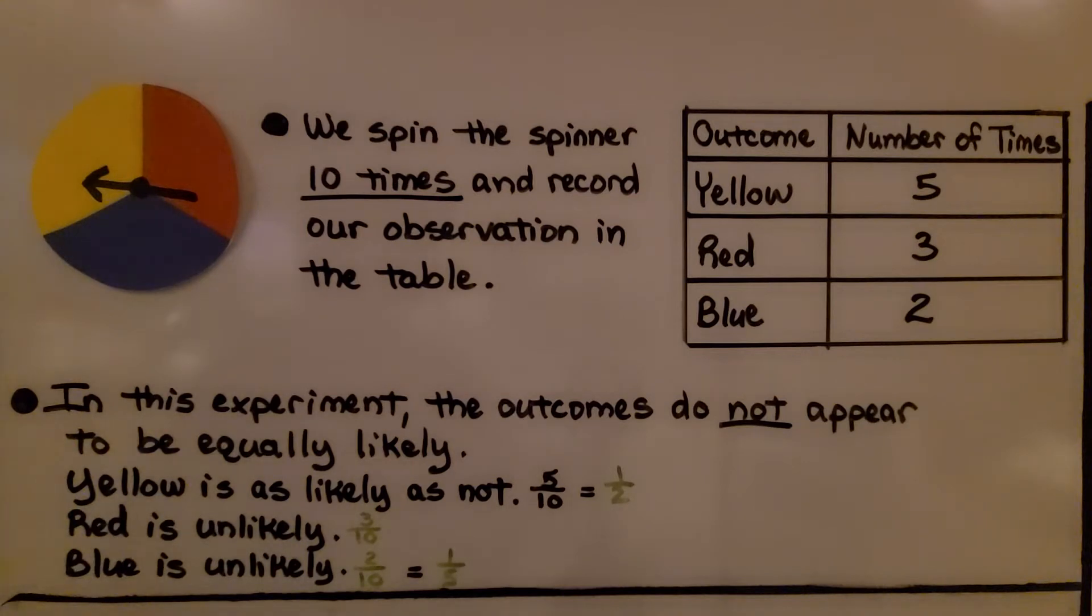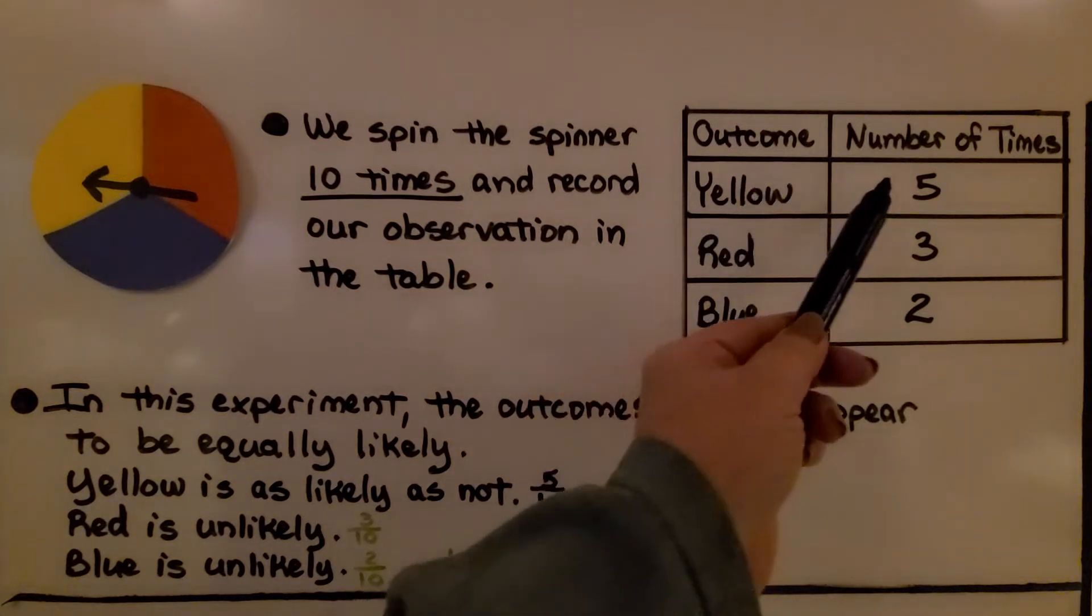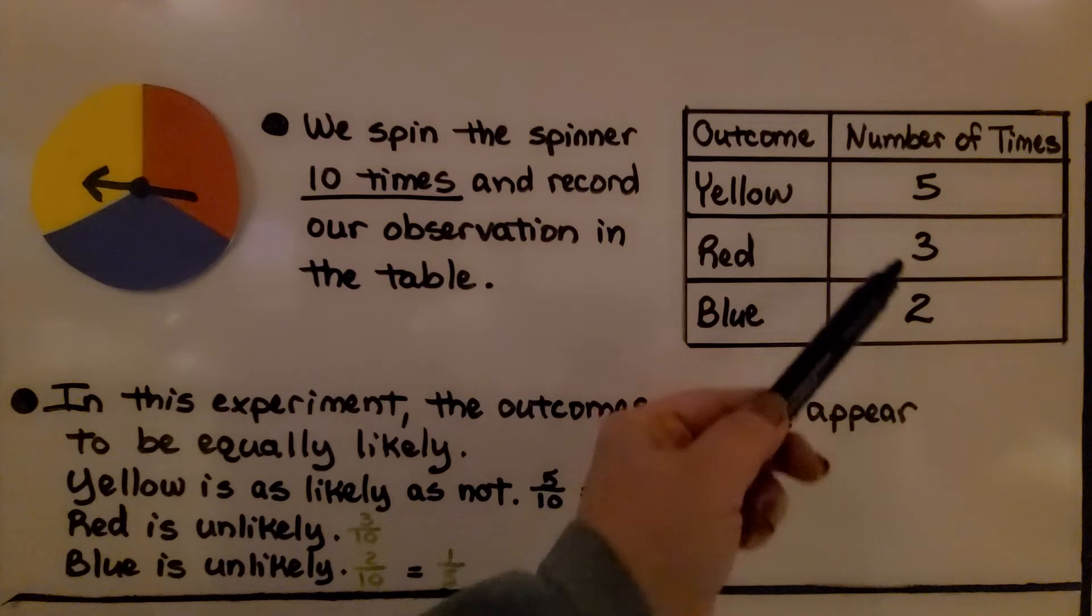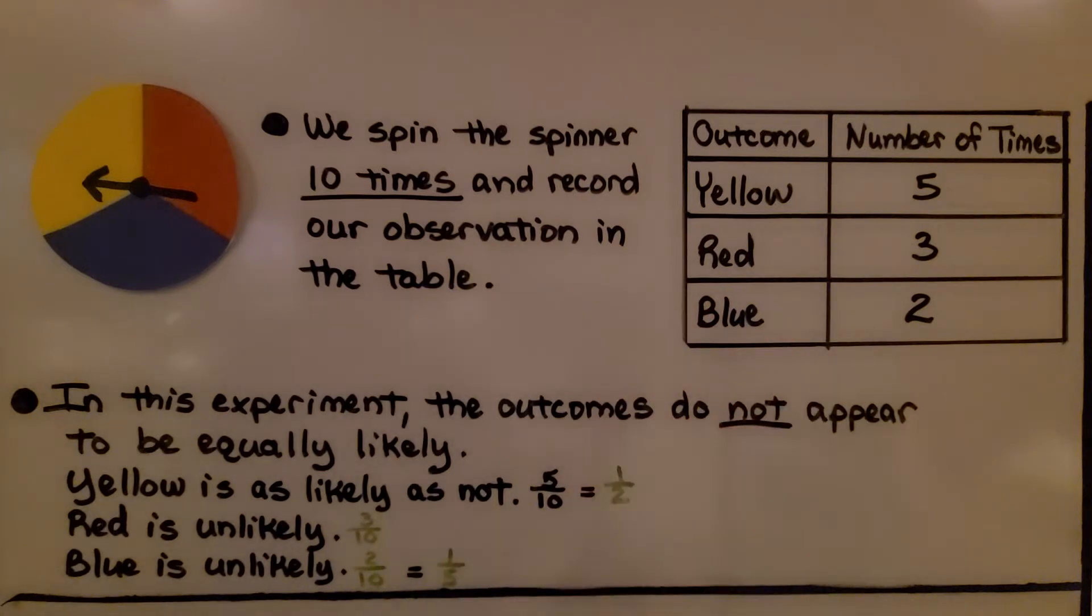We spin the spinner 10 times and record our observation in the table. We spin it, and we got yellow 5 times, red 3 times, and blue 2 times. In this experiment, the outcomes do not appear to be equally likely. Yellow is as likely as not. We got 5 out of 10, 5 tenths, which is equal to 1 half.